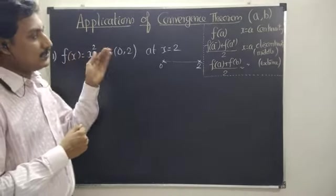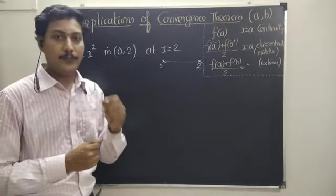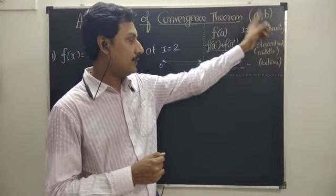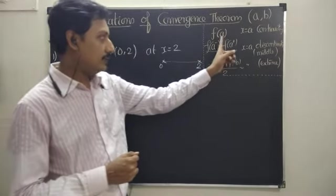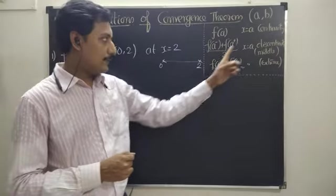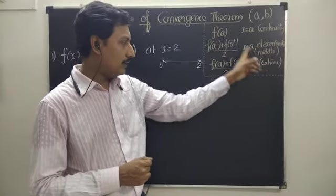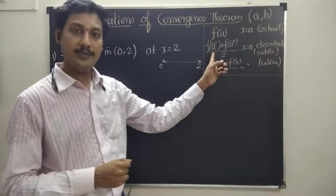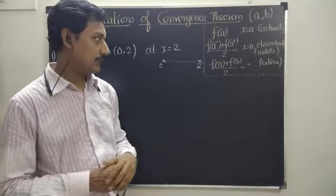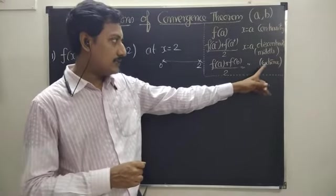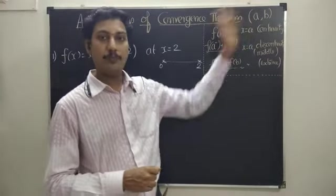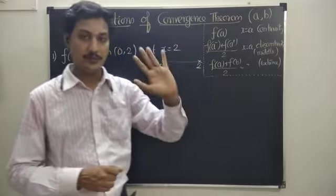The convergence theorem says that if the point is a point of continuity in the given interval (a, b), then it is f of x. Suppose it is a discontinuity in the middle, take the average of the left-hand side and right-hand side limits. If it is the extreme side, take the average of both the extreme point values. So, that is the concept.